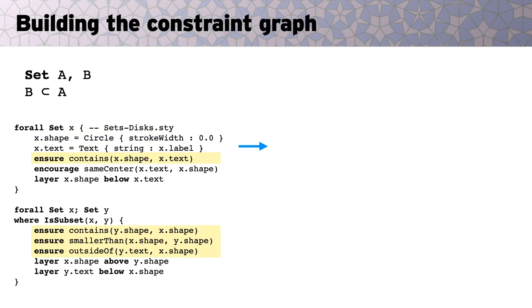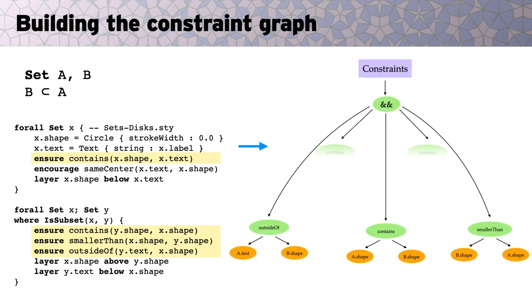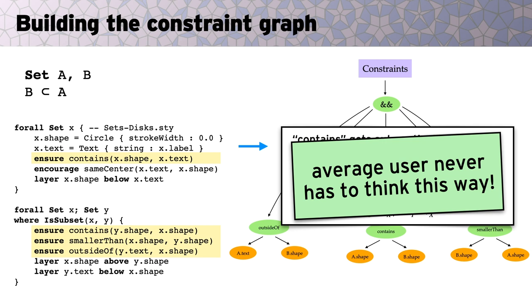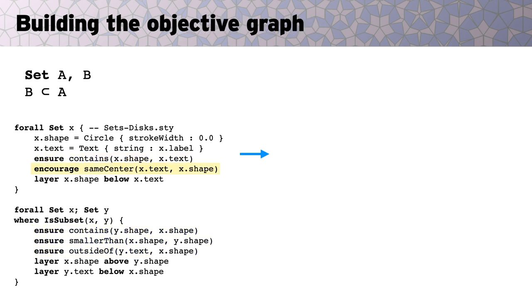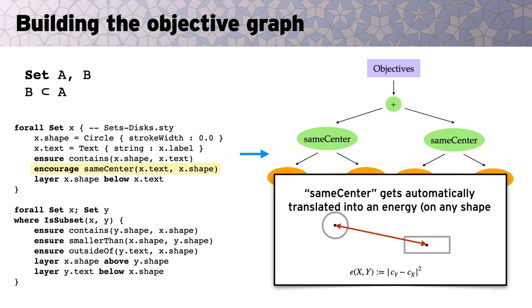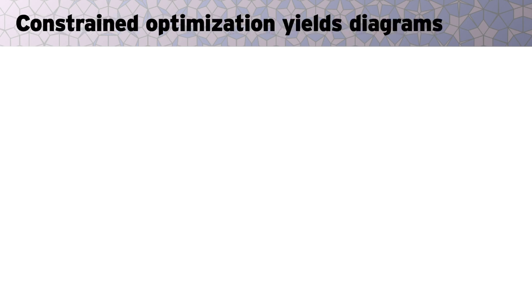A similar process builds up a graph describing the constraints on the diagram. Here, for instance, the statement that one circle contains another gets translated into an inequality constraint. Of course, the user never has to think this way. They can usually just type high-level statements. Likewise, we build the graph for the objective, which basically provides a measure of quality for any candidate diagram. Again, we translate high-level objectives, such as encouraging two objects to have the same center, into specific mathematical functions. Now the compiler has produced a constrained optimization problem that can be solved to yield diagrams.